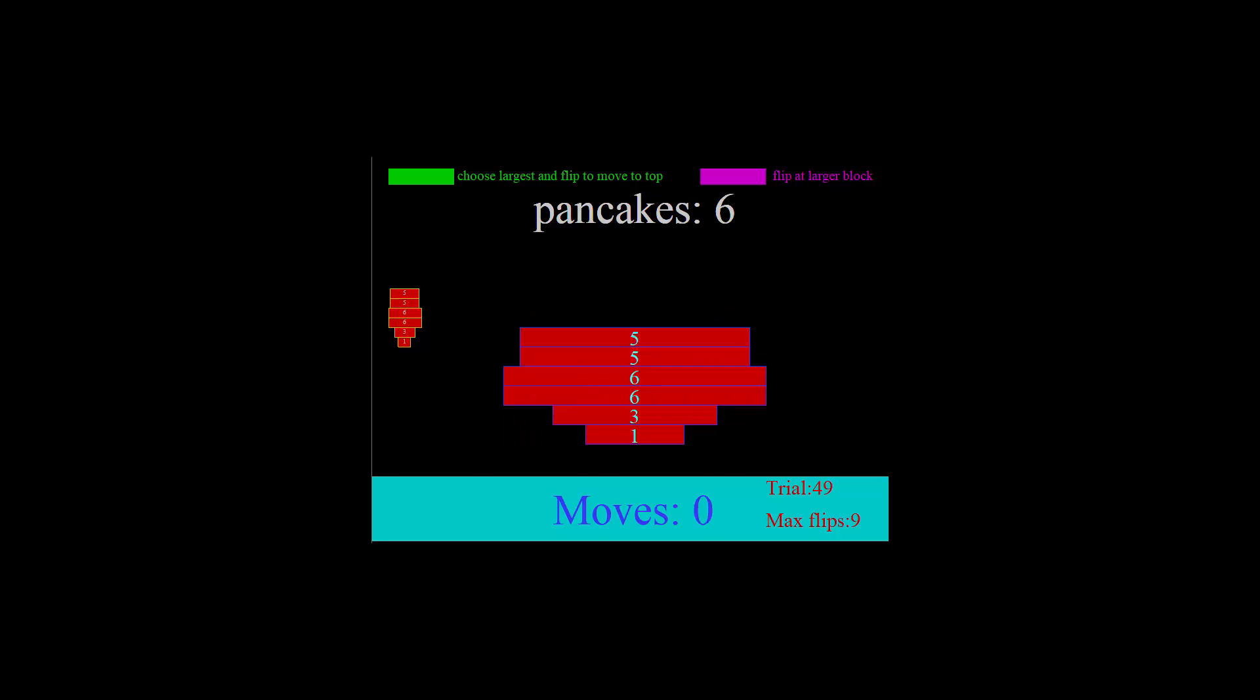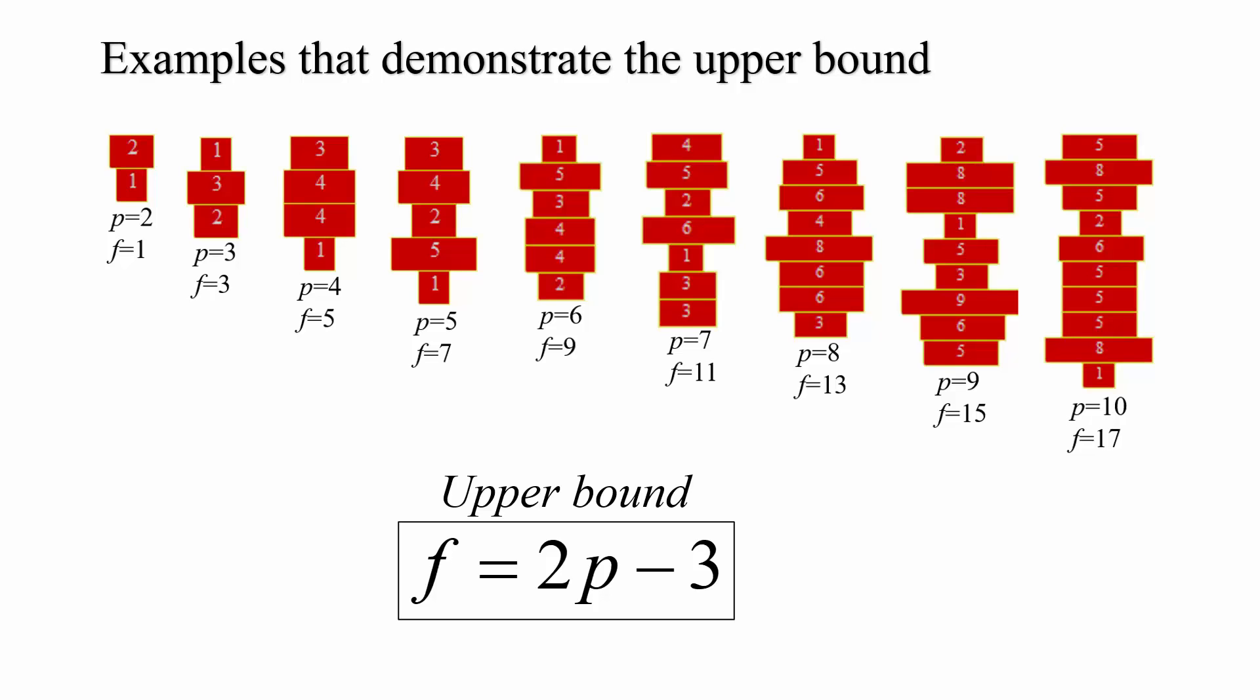There we go 48, 49 and 50 trials. As we saw from the simulation we can summarize the results here. We have different numbers of pancakes to begin with and how many flips are required to obtain the maximum. So for example for two pancakes only requires one flip, three pancakes a maximum of three flips is required all the way up to ten pancakes where we know that we don't need more than 17 flips to sort them.